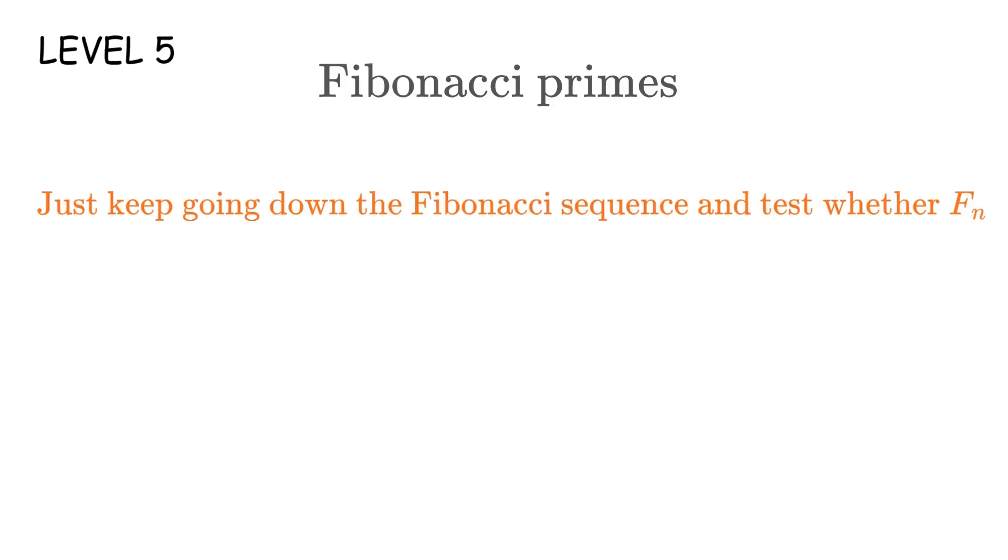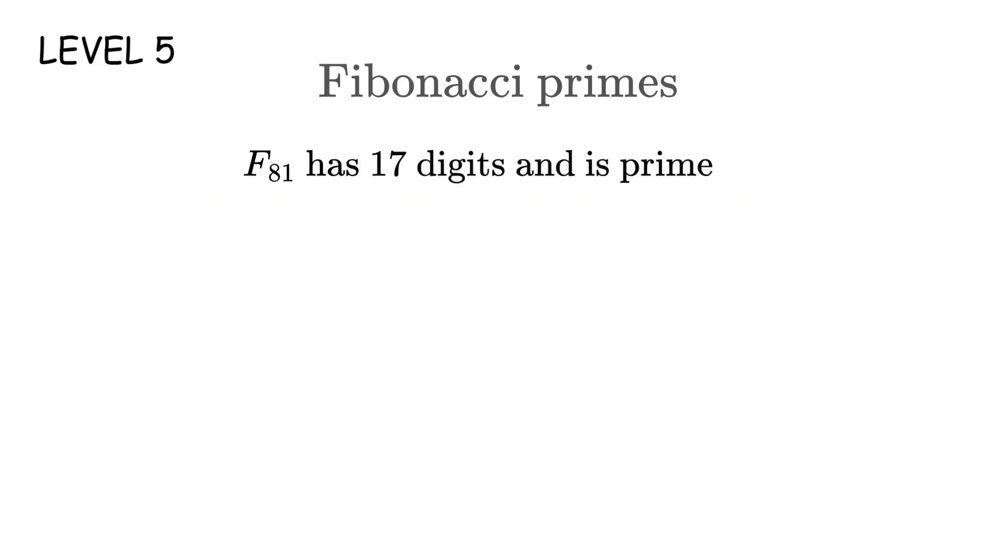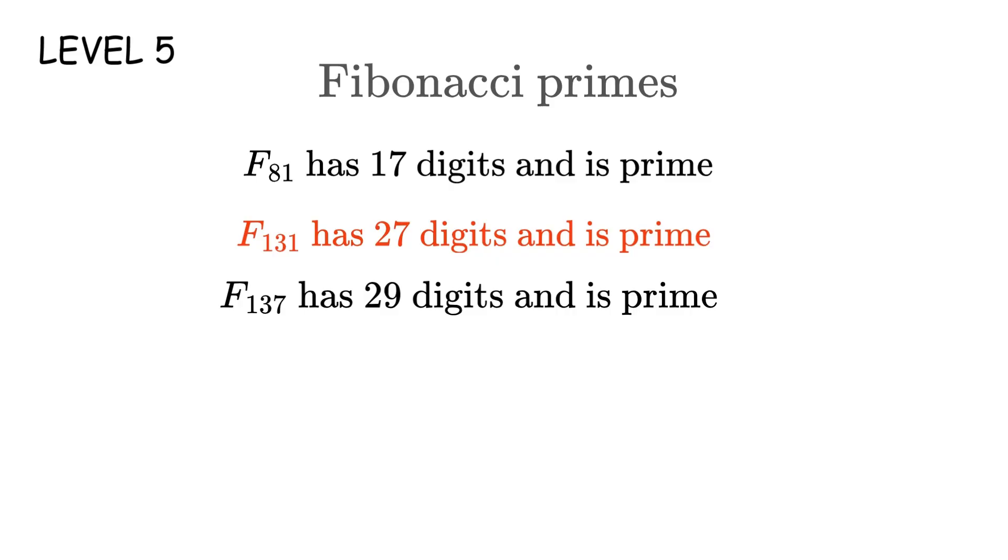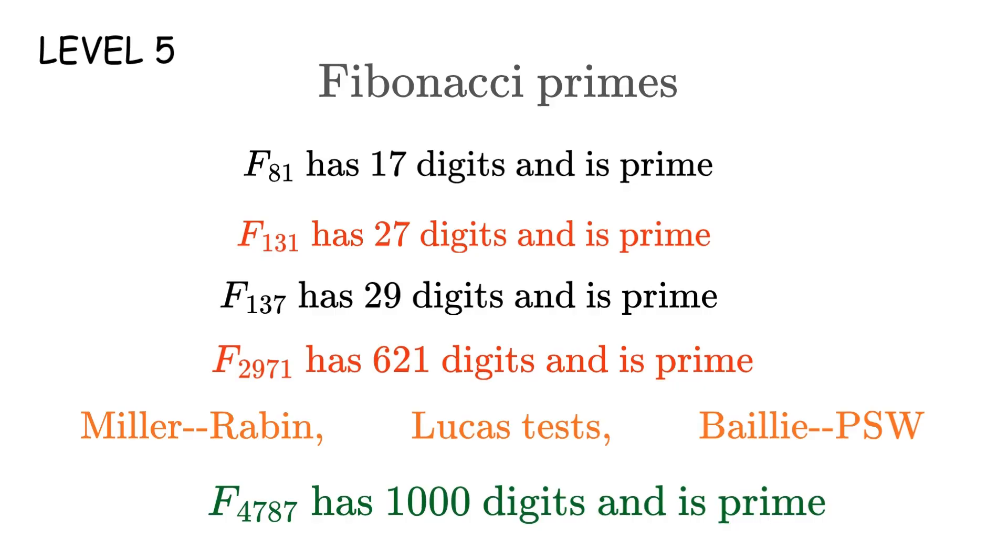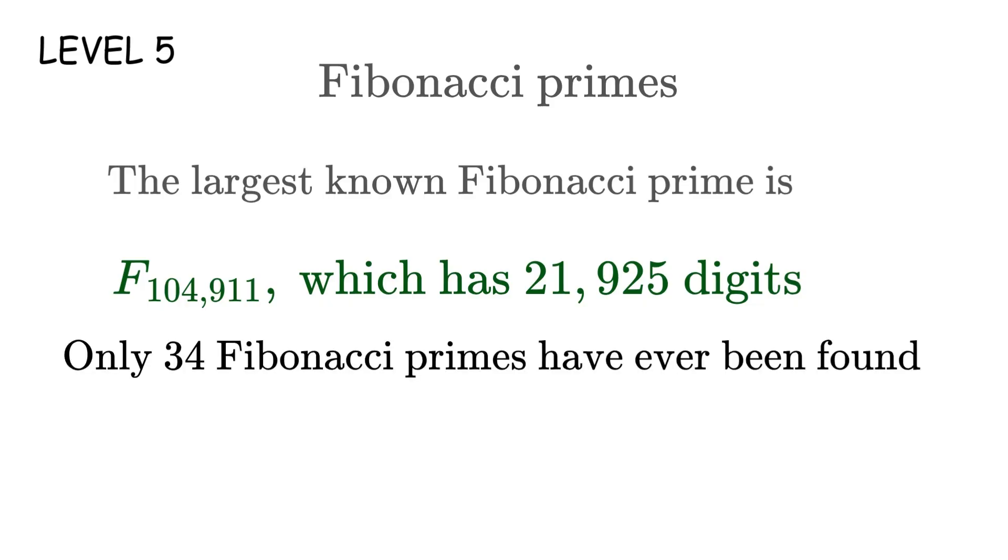The pattern seems simple, right? Just keep going down the Fibonacci sequence and check if the ones at prime indices are prime. But testing gets harder because Fibonacci numbers grow exponentially fast. F_100 already has 21 digits. Now here's where it becomes unbelievably difficult to verify. F_81 has 17 digits, and it's prime. F_131 has 27 digits, prime. F_137 has 29 digits, prime. F_2,971 has 621 digits, and it's prime. To check if a number with hundreds of digits is prime, you need probabilistic primality tests like the Miller-Rabin test or Lucas-Lehmer style tests. F_4,787 has 1,000 digits, and it's prime. The largest known Fibonacci prime is F_104,911, which has 21,925 digits. Only 34 Fibonacci primes have ever been found, and we've searched up to F_n for n in the hundreds of thousands.